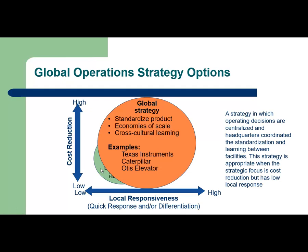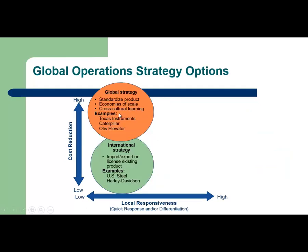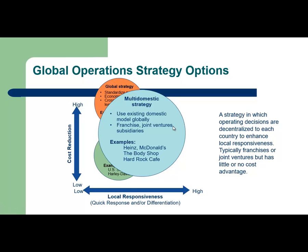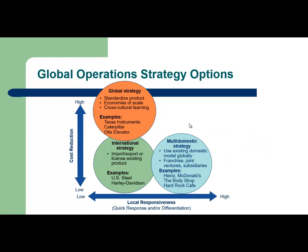If the company is looking to standardize their product and use mass ordering, then a global strategy should be used. This strategy is appropriate for reducing cost, but has a low local response, so it resides on the upper left corner of the strategy graph. If the company is using an existing domestic model globally through joint ventures or franchise, then the best strategy to use will be the multi-domestic strategy, which provides fast response to the local market but has little or no cost advantage, placing it in the lower right corner.